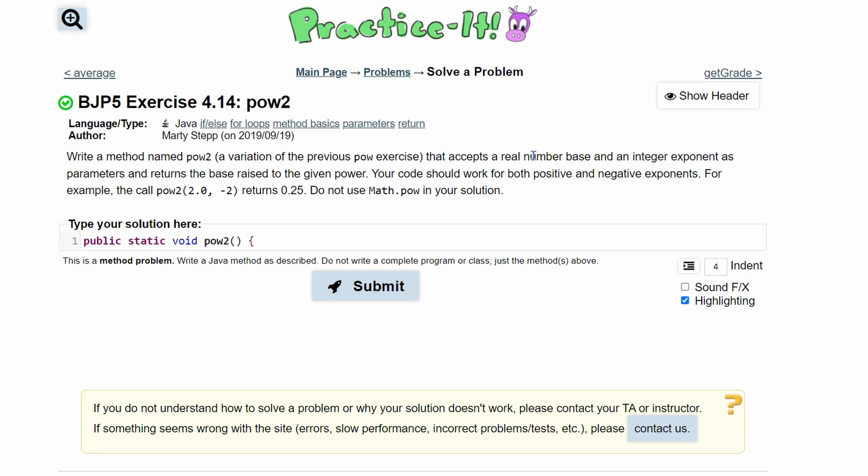It accepts a real number base and integer exponent as parameters, and then it's going to return the base raised to our given power. So we know we need to take two things, and we're showing this right here. We're going to have an int b for base. I'll just write this whole thing out. It's good practice to write everything out.